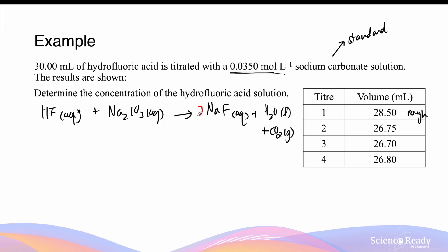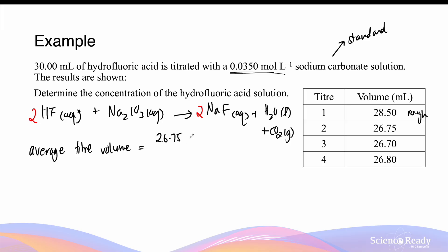We should add 2 in front of sodium fluoride to make sure there are 2 sodiums on both sides, and add 2 in front of hydrofluoric acid to balance the number of fluorines on both sides. The average titer volume is calculated by adding titer volumes 2, 3, and 4, excluding the rough titration, and this gives 26.75 millilitres.